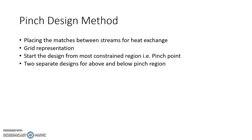We had seen the problem table algorithm wherein we can find the minimum hot and minimum cold utilities and the pinch temperature — for hot streams and for cold streams. The next step is to design the network which will achieve the energy target, developing a network where we place heat exchangers between streams to exchange heat and convert the problem table algorithm into a network. Before we discuss the pinch design method, let us understand certain aspects related to it.